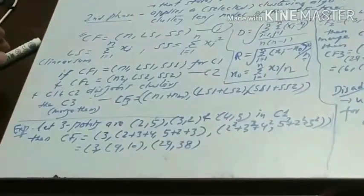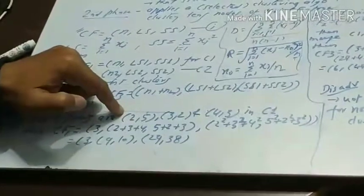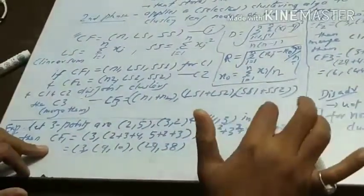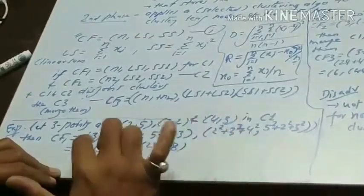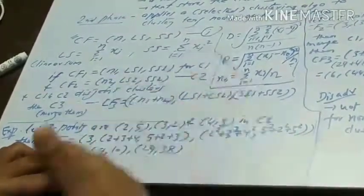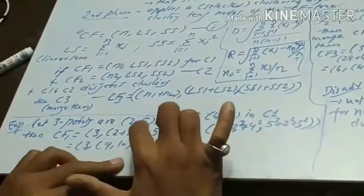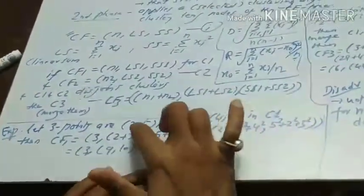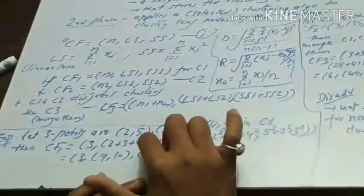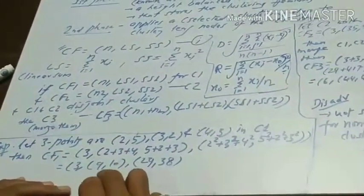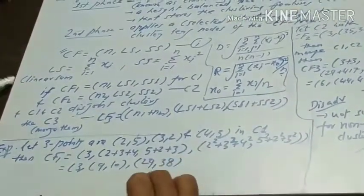Now we go for an example. Suppose we have three points in a cluster C1 and these points are (2,5), (3,2), and (4,3). Then we calculate the clustering feature of this cluster C1 as n, that means number of points is 3. Here we put 3. LS1, that means linear sum of these three points, is calculated as (2 plus 3 plus 4) comma (5 plus 2 plus 3). And then SS, that means square sum of these points, is calculated as (2 square plus 3 square plus 4 square) comma (5 square plus 2 square plus 3 square), which finally gets the values: 3 comma (9 comma 10) which is LS, and SS is (29 comma 38).